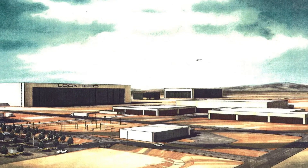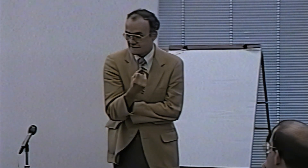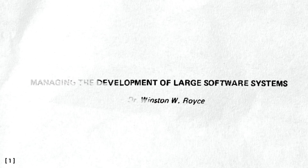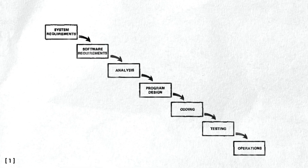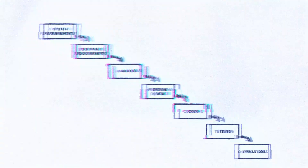The father of the Software Development Lifecycle was a computer scientist and director at Lockheed Software Technology Center in Austin, Winston W. Royce. In his influential article, "Managing the Development of Large Software Systems," he described implementation steps that are similar to what we use today.